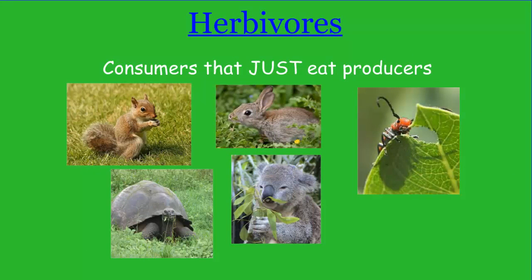Next we have herbivores. Herbivores are consumers that eat the producers, and they only eat the producers. Examples include insects like the grasshopper that eat only plants, as well as rabbits, squirrels, tortoises, koala bears, zebras, elephants, horses, and deer. There are a lot of herbivores — in fact, some of the world's largest animals are actually herbivores.